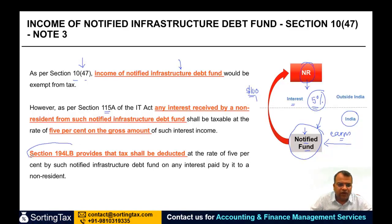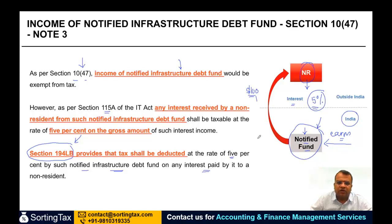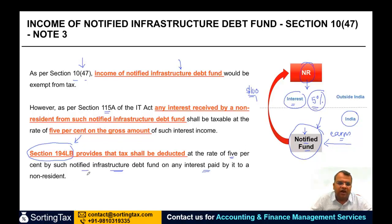Section 194LB is the section in which TDS is required to be deducted. It provides that tax shall be deducted at the rate of 5% by such notified infrastructure debt fund on any interest paid by it to a non-resident. So if you have any interest paid by this notified fund to a non-resident, it will be 5% TDS on the gross amount.